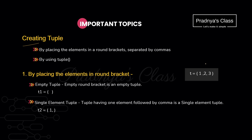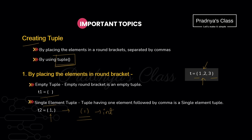You can create a tuple by enclosing the elements in round brackets separated by comma. You can create an empty tuple with empty round brackets. But note: to create a single element tuple, you must write that element followed by a comma. If you don't mention that comma, Python will consider it as an integer, not a tuple. There is also a method named tuple() to create a tuple from another sequence.